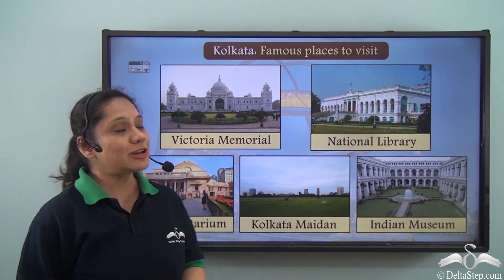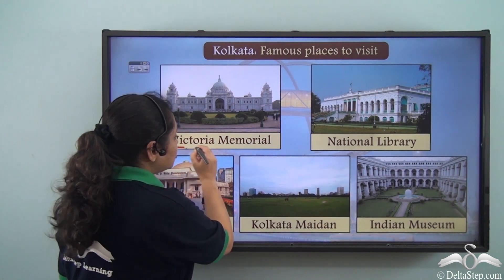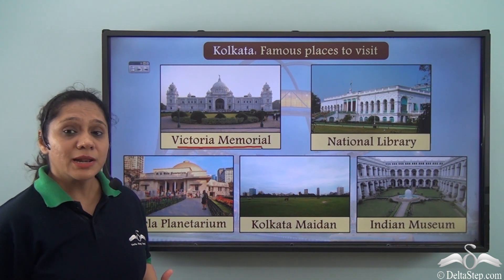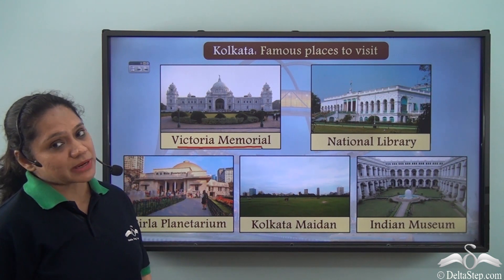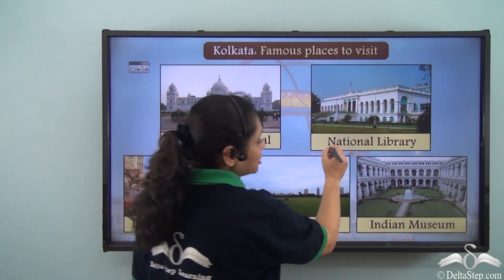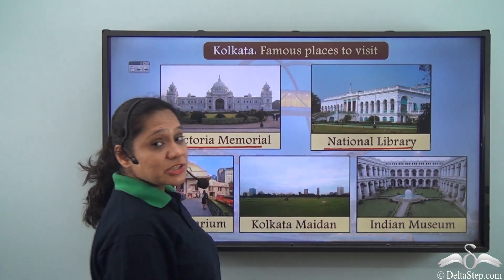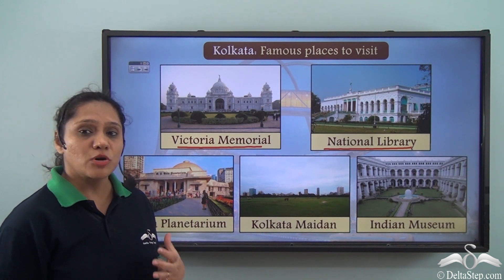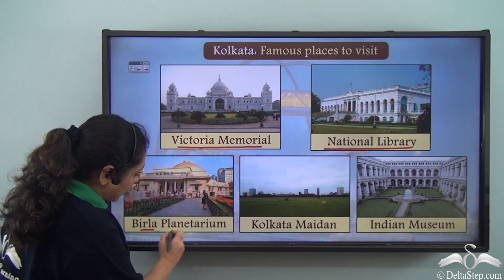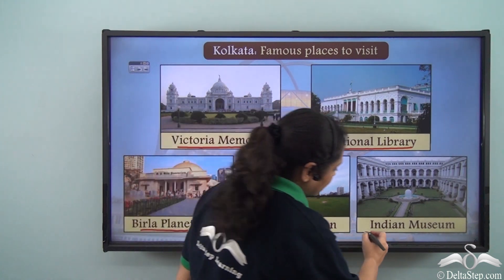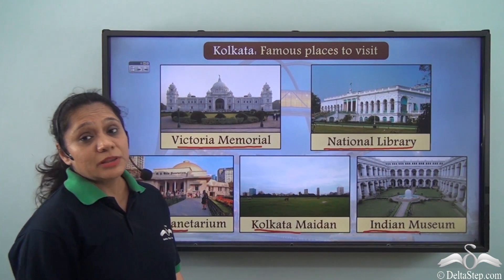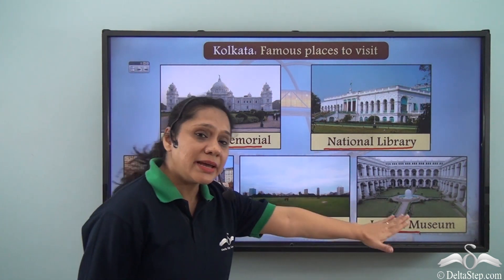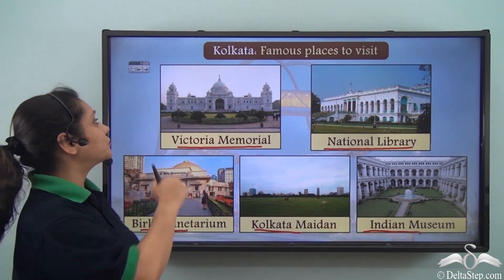Famous places to visit in Kolkata include the Victoria Memorial — a beautiful marble memorial made in memory of Queen Victoria — the National Library, which boasts a huge collection of books, the Birla Planetarium, Kolkata Maidan, and the Indian Museum. If you are a science or history enthusiast, the Indian Museum is the place for you.